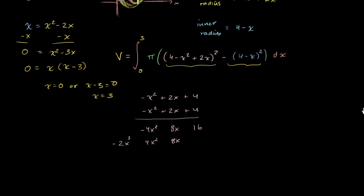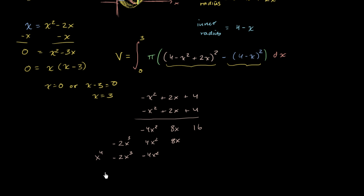And now we just have to multiply negative x squared times all of this. Negative x squared times 4 is negative 4x squared. Negative x squared times 2x is negative 2x to the third power. And then negative x squared times negative x squared is positive x to the fourth.